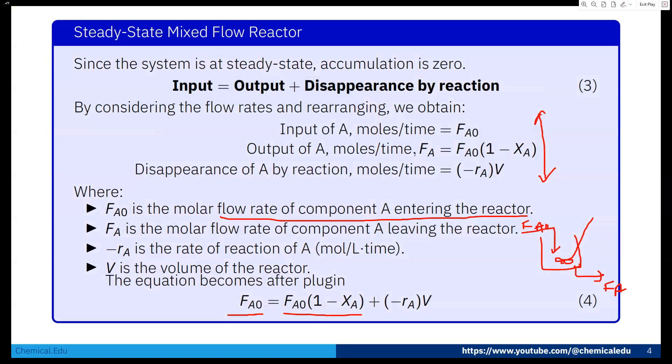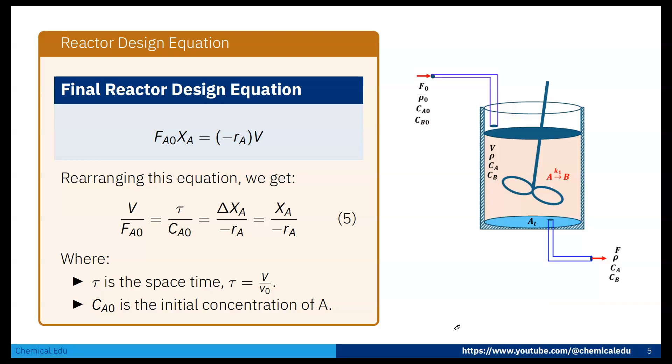Now for the final equation: if you do that, this will be FA0 minus FA0*XA, so this term will be FA0*XA plus (-rA) times V. So FA0 and this FA0 will cancel out, giving -FA0*XA plus -rA times V. The final equation will be FA0*XA equals -rA times V.